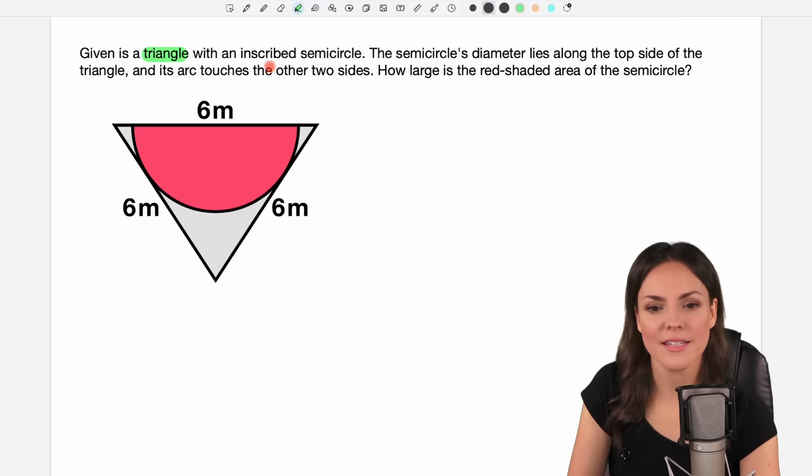Given is a triangle with an inscribed semicircle. So here we have our triangle and inside here is our semicircle. The semicircle's diameter lies along the top side of the triangle. So they tell us that this here is the diameter of our semicircle and its arc touches the other two sides.